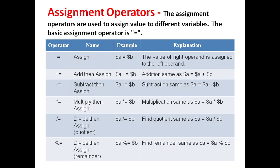Next is Assignment operators. The assignment operators are used to assign values to different variables. The basic assignment operator is equal to. The equals operator sets the value of the right operand to the left operand. Plus equal to means add then assign — it performs addition, same as a equals a plus b.